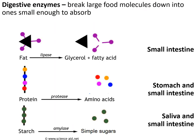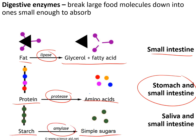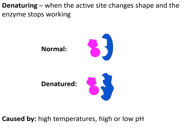Digestive enzymes: fat is digested into glycerol and fatty acids by lipase in the small intestine. Proteins are digested into amino acids by protease in the stomach and small intestine. Starch is digested by amylase into simple sugars. The whole point of digestion is to break large food molecules down into ones small enough to absorb into the blood.